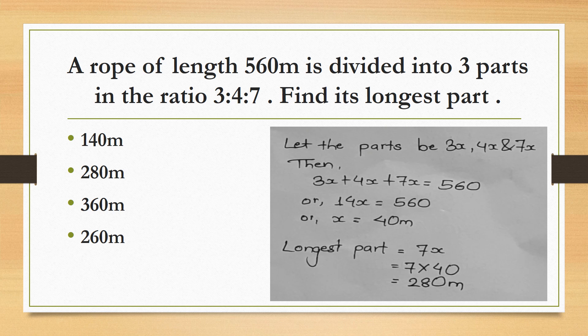A rope of length 560 meters is divided into 3 parts in the ratio 3:4:7. Find its longest part. The total rope is 560 meters.